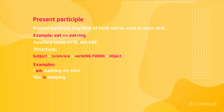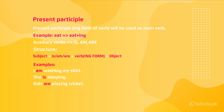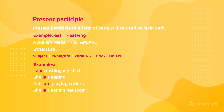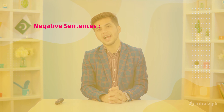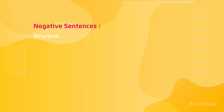Let's see the structure through examples. First: 'I am washing my shirt.' Second: 'She is sleeping' — here 'she' is a singular subject so 'is' is used, followed by 'sleeping' as the present participle. 'Kids are playing cricket' — 'kids' is a plural subject so 'are' is used, then 'playing' in the ing form, then object 'cricket.' Also: 'She is cleaning her room' and 'She is making tea.' All of these sentences belong to present continuous positive sentences.